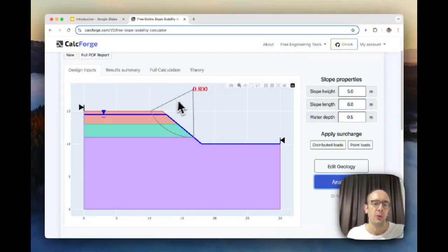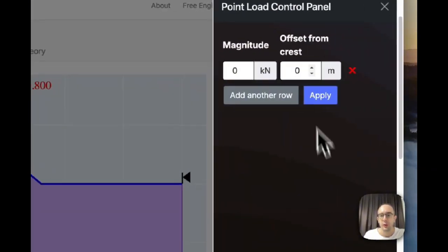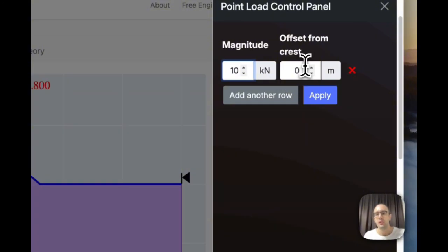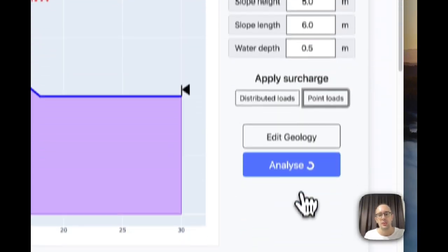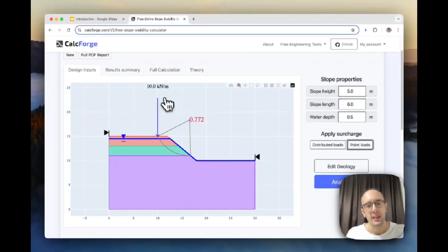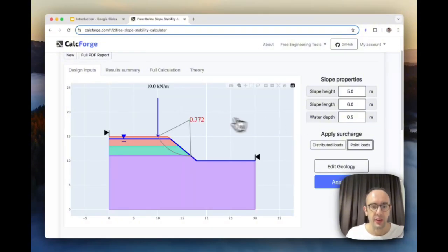We can also add surcharge like a distributed load or a point load. I can add at the crest a 10 kilonewton point load which is two meters away from the edge and click analyze again. You'll see here I've added this 10 kilonewton load and it's made the factor of safety worse. What we can do with this software is we can use this to validate or analyze slope stability problems, but it's key that we use this in the right situations. This calculator is quite good for soft ground. It uses the method called the Bishop's method which is more suited towards soft ground rather than something like blocky rock.